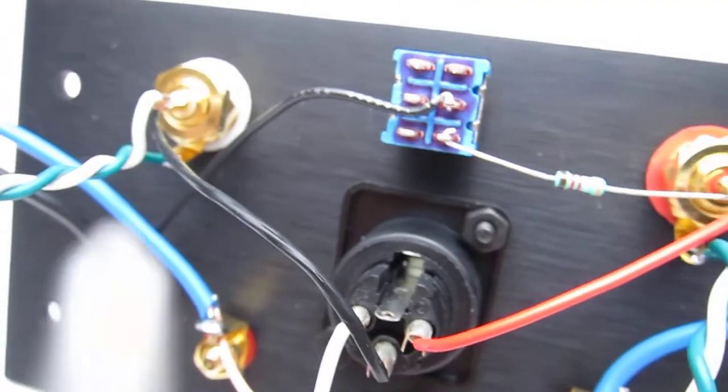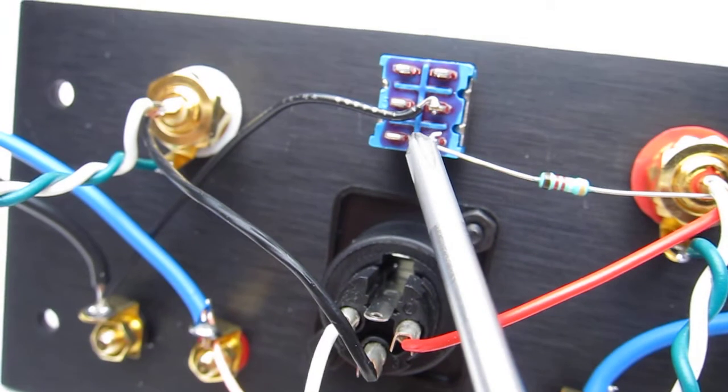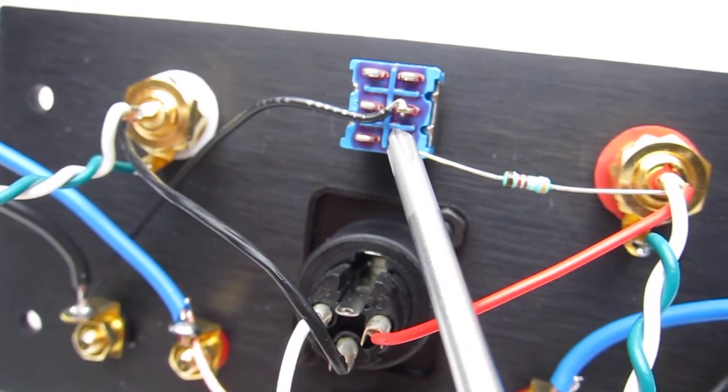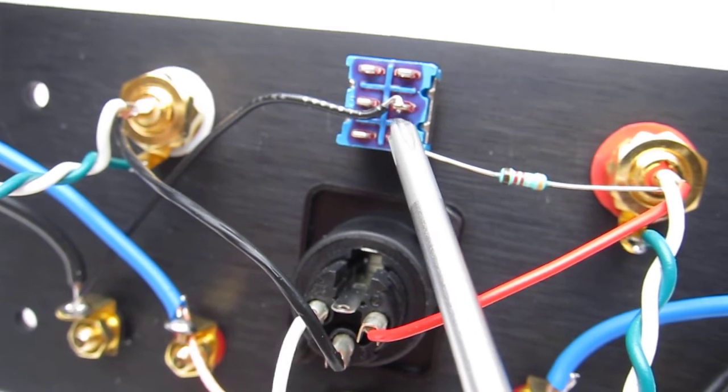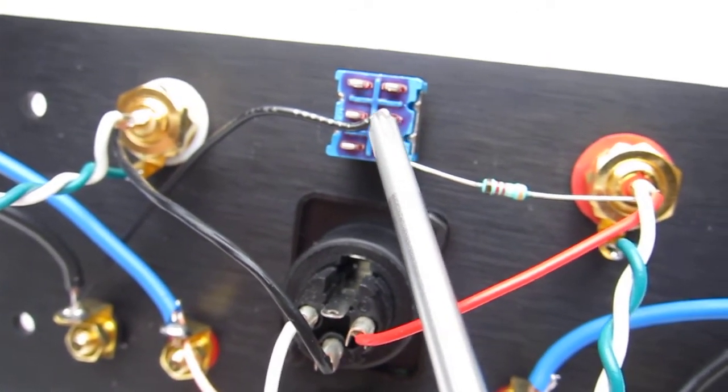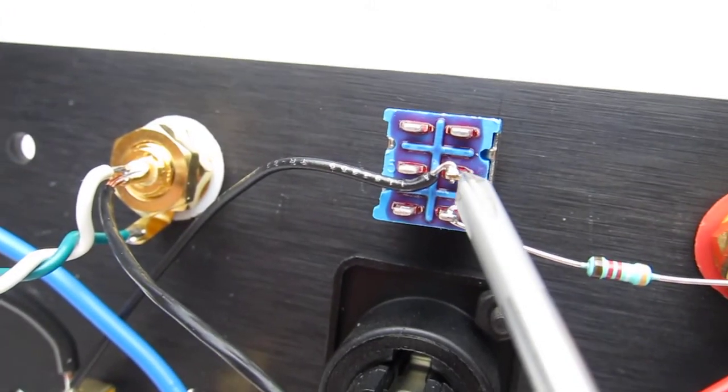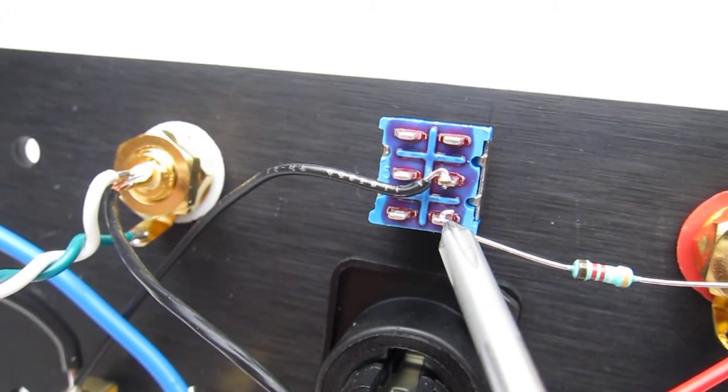Moving up, we've got the switch here configured to make it in between RCA input monoblock, bridge monoblock, or standard stereo. If you see that both connections are on the same side of the switch, that's the center, that's the bottom.